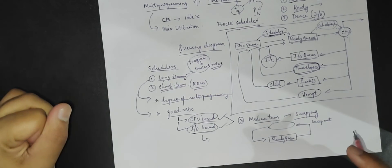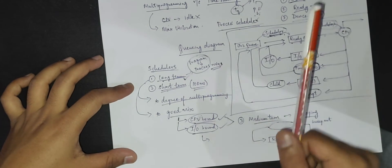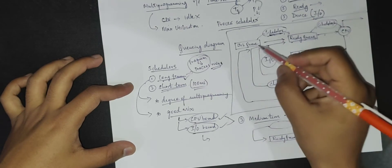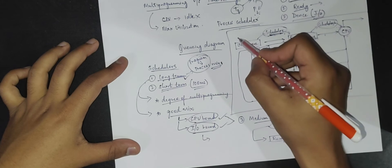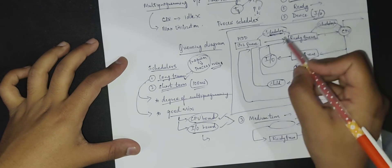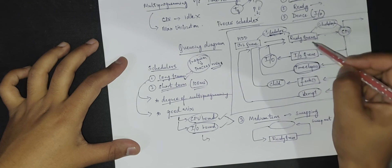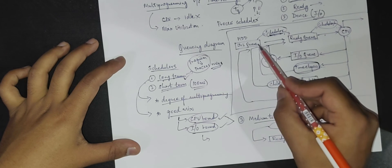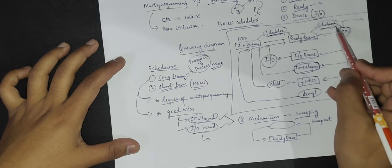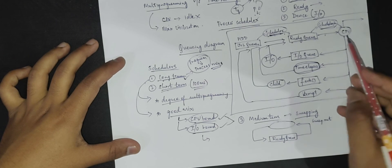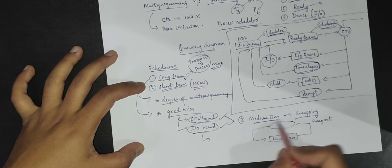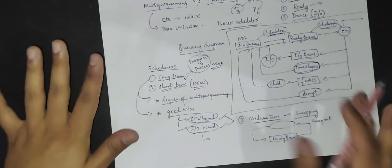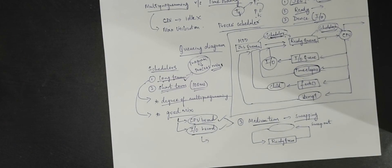So this is all about process schedulers. To recap: we have three types of queues — the job queue, which stores all programs on non-volatile memory like your hard disk; the ready queue, which stores all processes in main memory; and the device queue, which has all processes waiting for IO. The long-term scheduler picks processes from the job queue and moves them to the ready queue. The short-term scheduler picks processes from the ready queue and gives them CPU. And if there is an imbalance, the medium-term scheduler swaps IO-bound and CPU-bound processes to maintain balance.